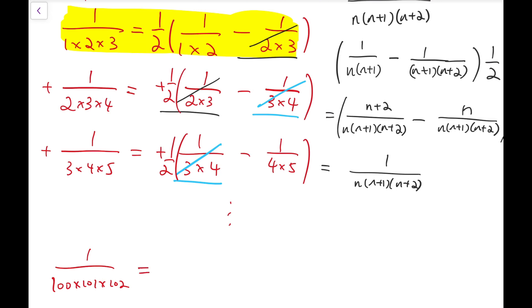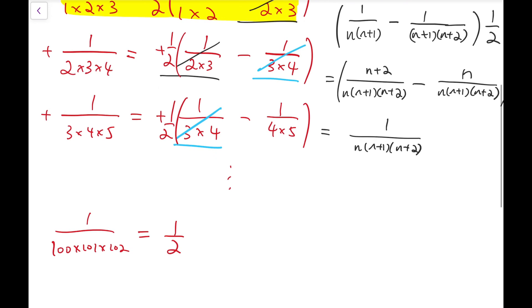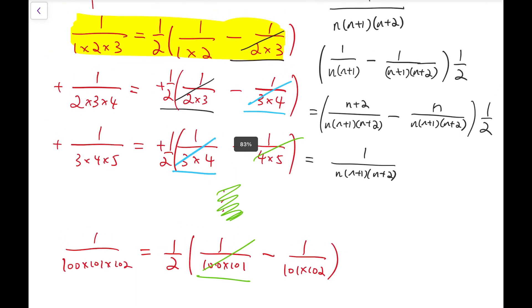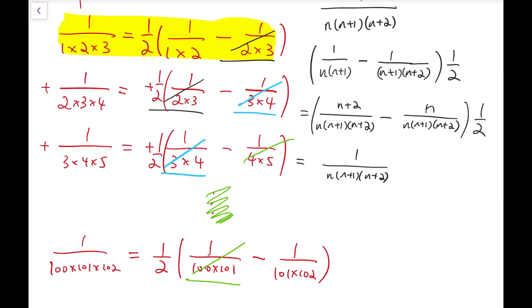Now at the end, I should have something like 1 over 100 times 101 times 102 should equal to 1 half times (1 over 100 times 101 minus 1 over 101 times 102). And in fact, even this fraction at the end should be cancelled out as well. With many things cancelled in between, and at last, we should only have the first term and our final term.